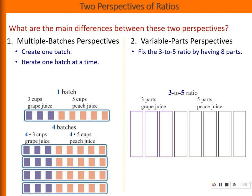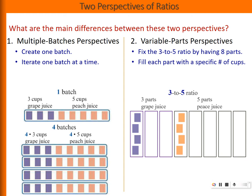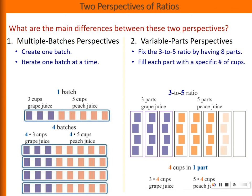Now what about the variable parts perspective? In this perspective, we fix each part with a specific number of cups. So if we make each part have four cups, we fill all the other parts with the same number of four cups. Take a look and see if you notice the difference.